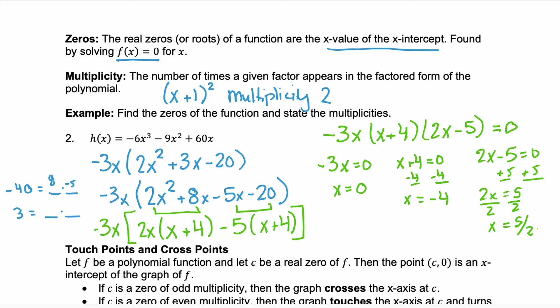So, our zeros here are x = 0, x = -4, and x = 5/2. Now, what are the multiplicities of each of these? Go back and look at our factored form. Each of those zeros only happens one time. So, these are all a multiplicity of 1. Right? It only happens once.